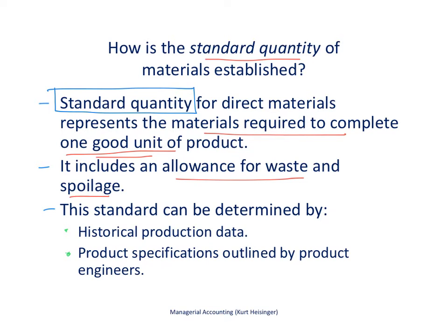Standard quantity can be determined in a number of different ways. It could be determined by looking at historical production data — going back to last month or the last several months to see what it takes in direct materials to make one good unit of product. Or we can look at product specifications, where engineers have put together plans showing exactly what's needed to produce one good unit.